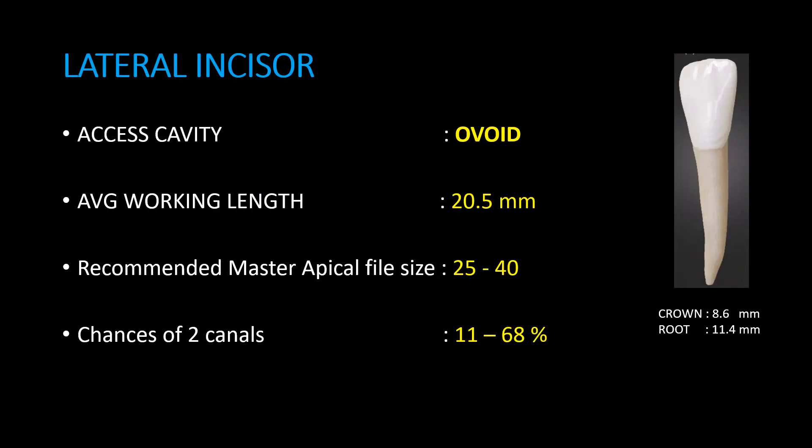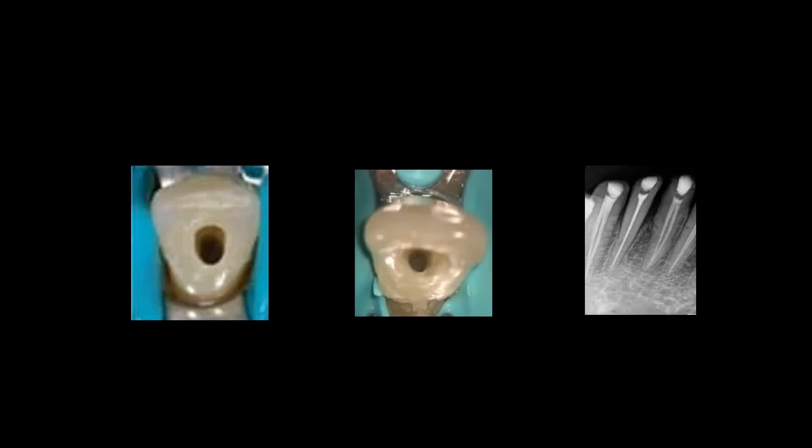Lateral incisor. Access cavity is oval shaped. Average working length is 20.5 mm. Recommended master apical file size is 25–40. Chances of two canals is 11–68%. Here, a pic shows ovoid shaped access cavity preparation and radiograph of mandibular lateral incisor with accessory canal is shown.